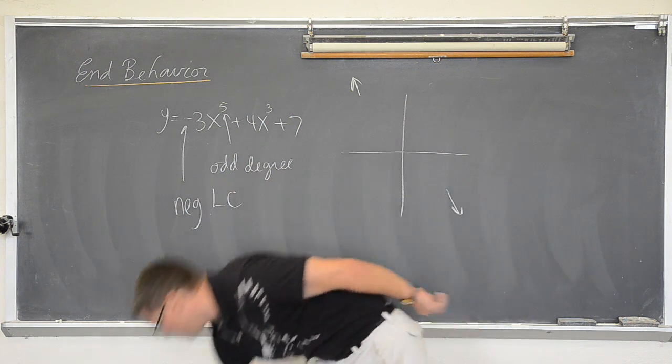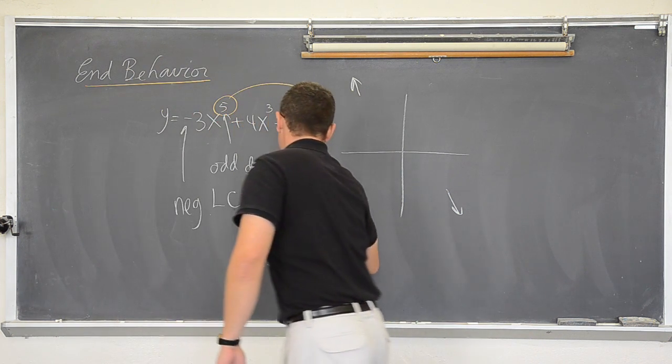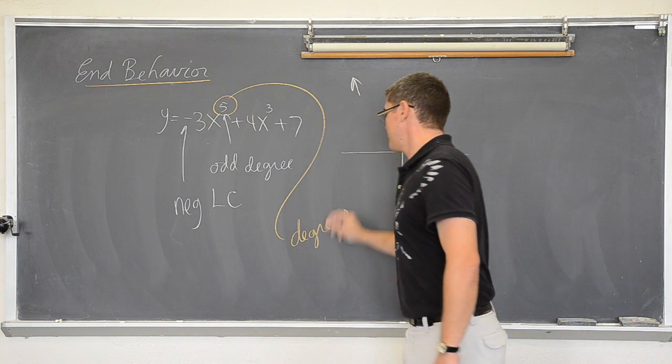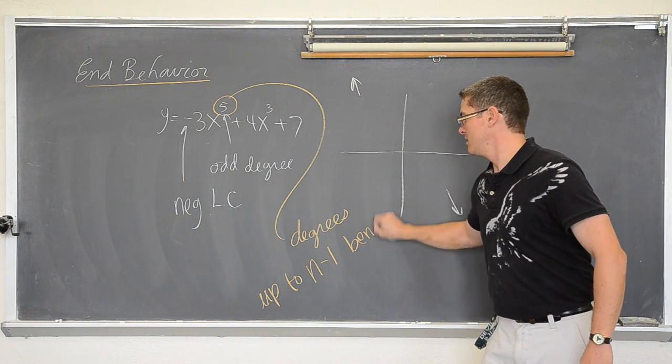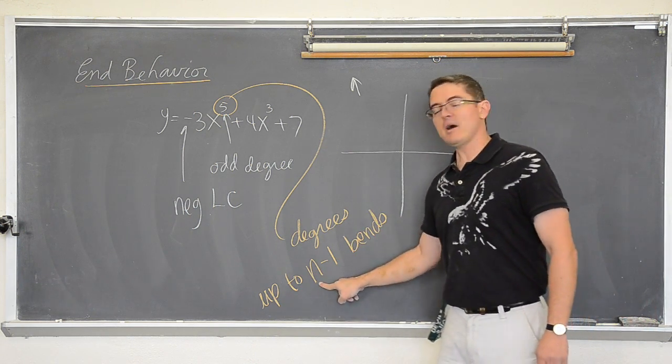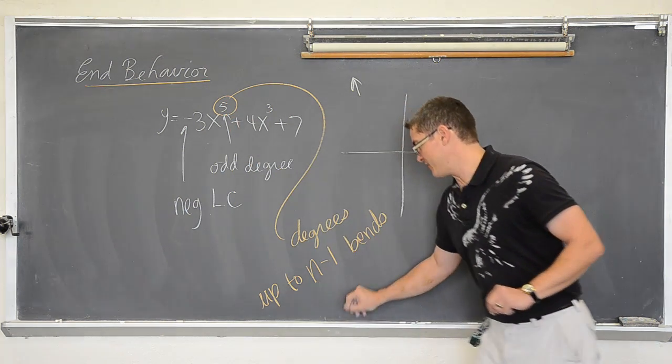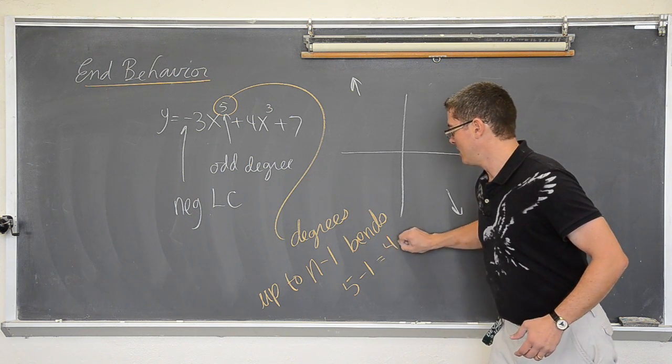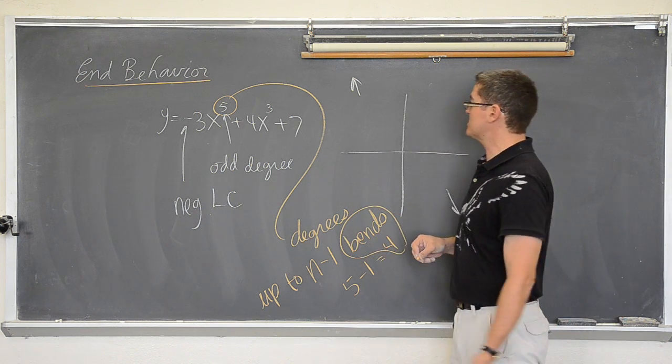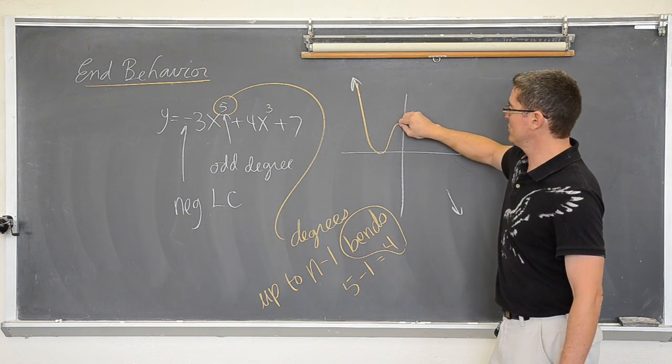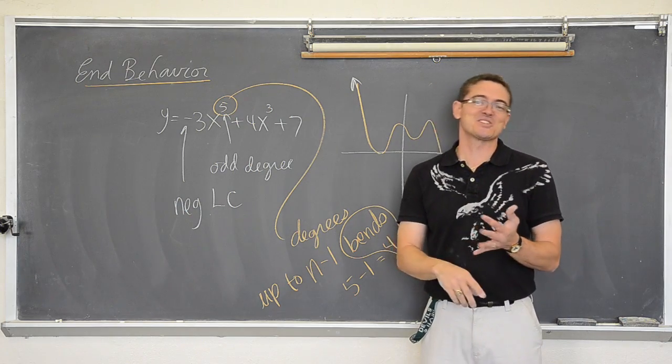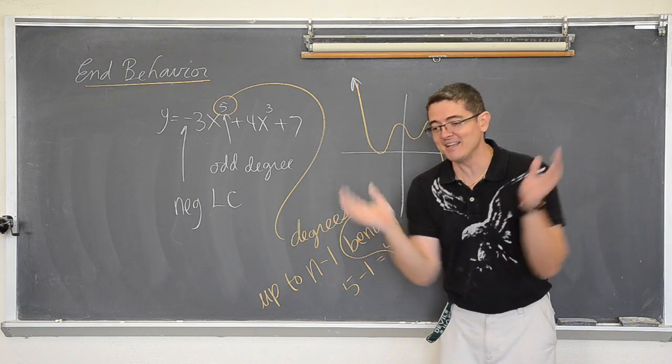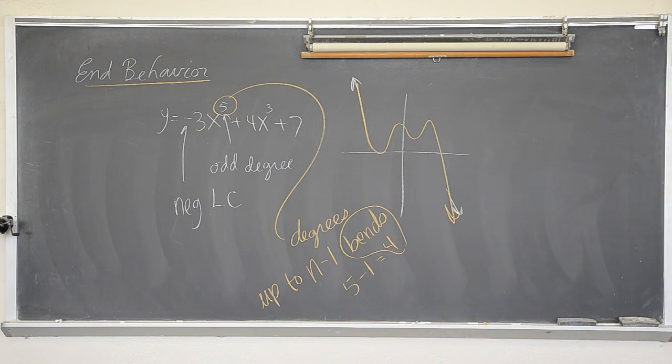This degree of 5 tells us that we have n minus 1 or up to n minus 1 bends. n minus 1 is the degree. My degree is 5. I have one minute left. That is going to be 5 minus 1. So I could have up to 4 bends. Which means the graph might look something like 1, 2, 3, and 4 bends. Do I know what the graph looks like? Absolutely not. Because I have not talked about x intercepts or y intercepts or multiplicity of those. But that is coming and that is my time right now. Check out part 2.